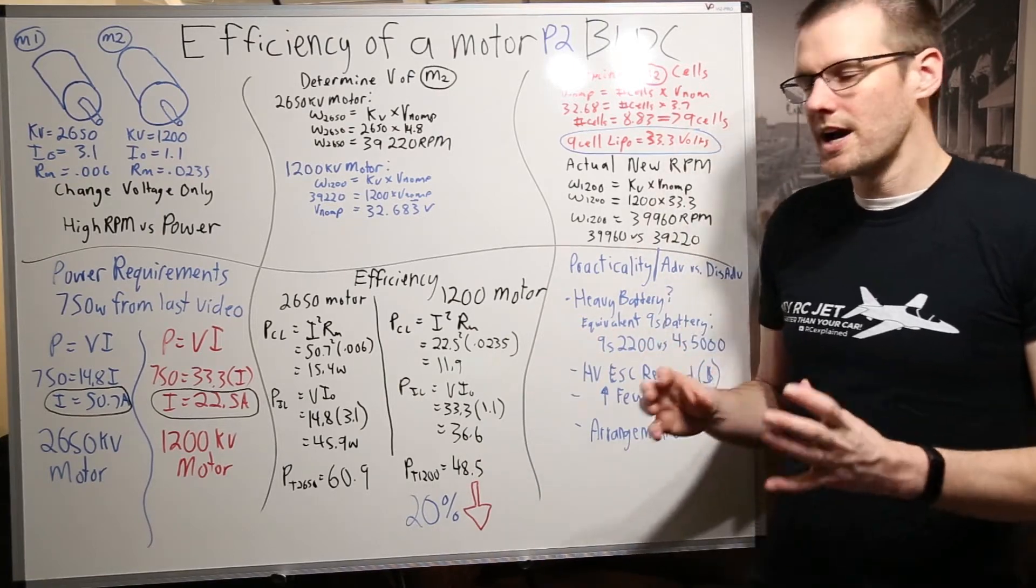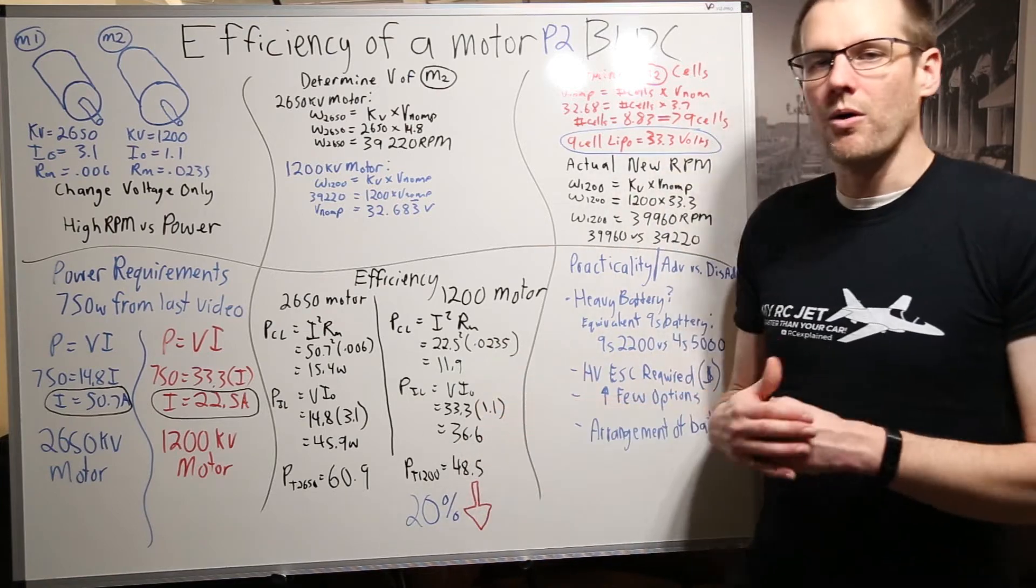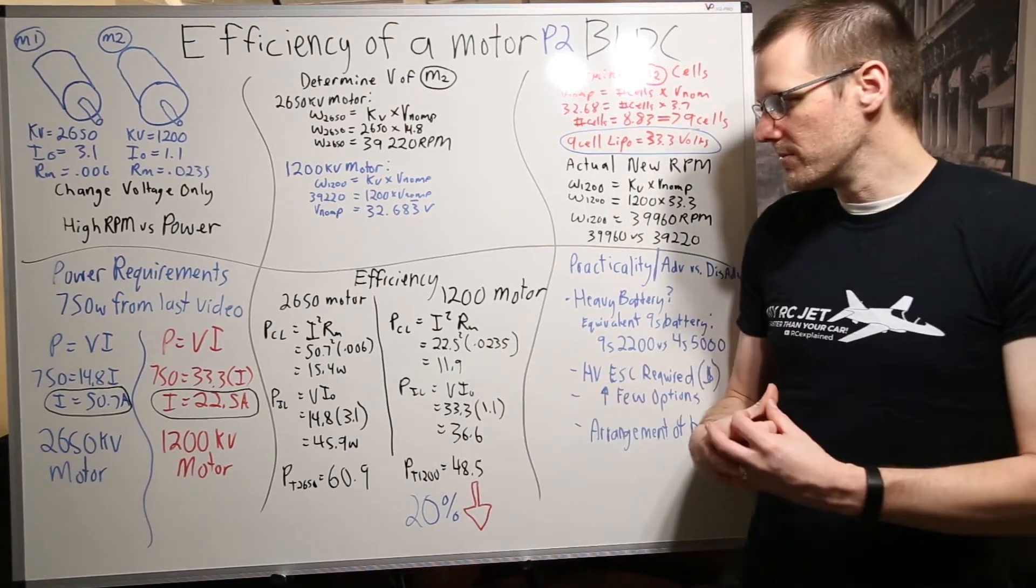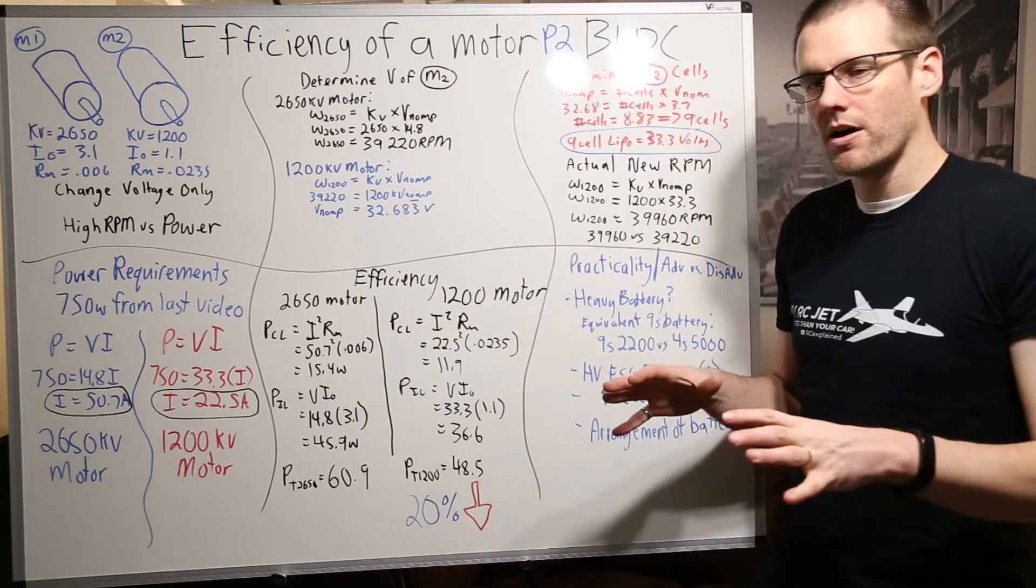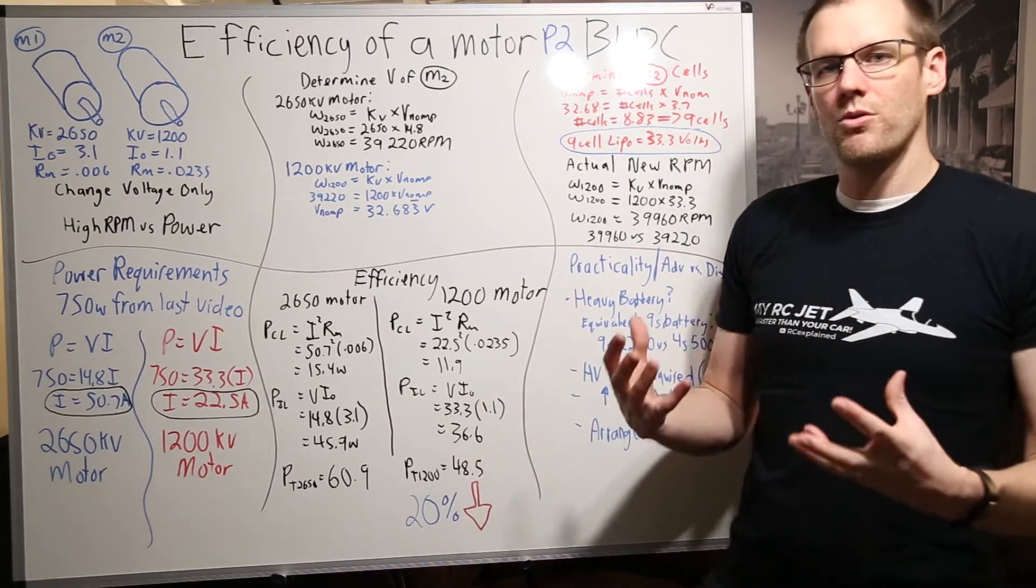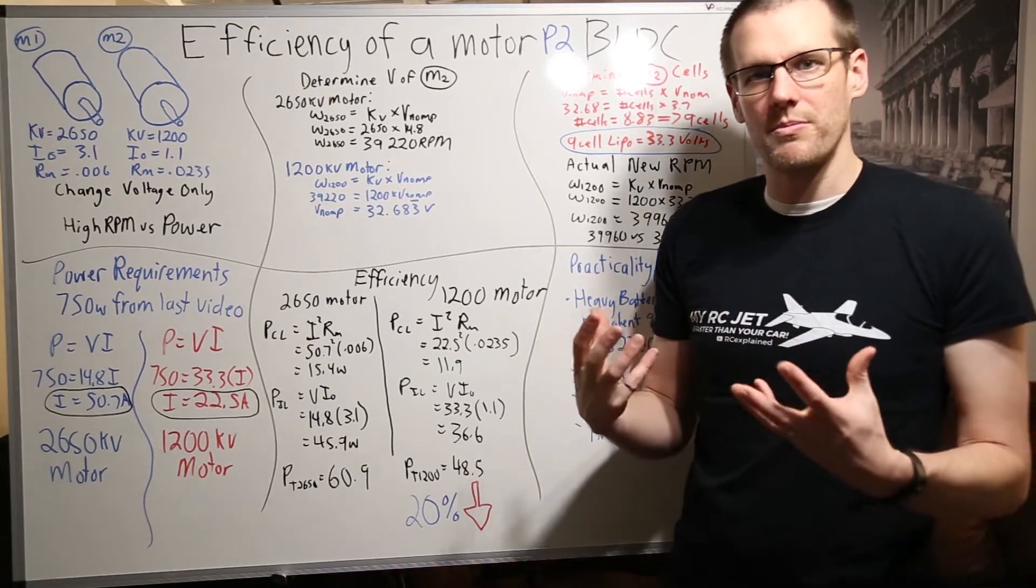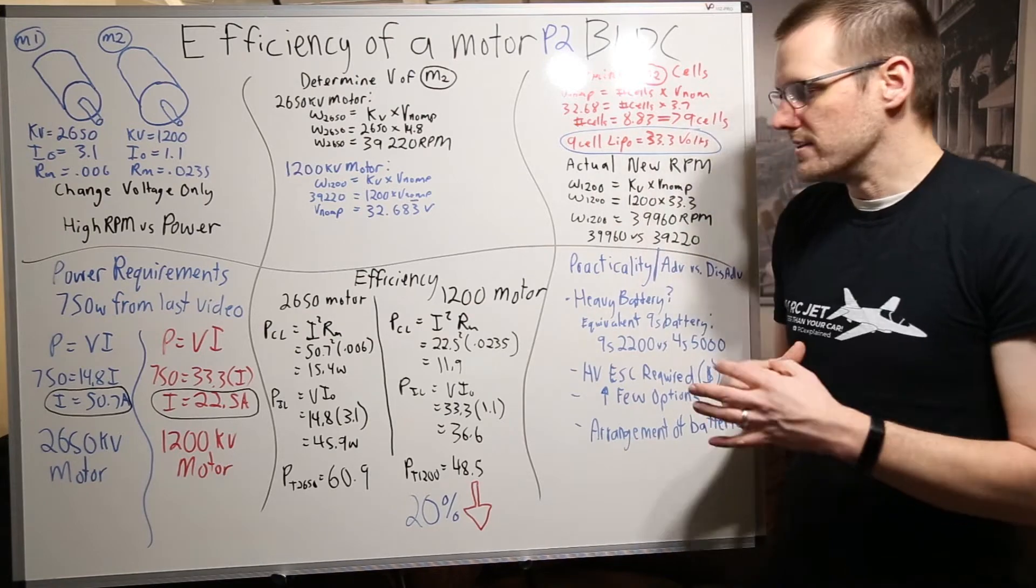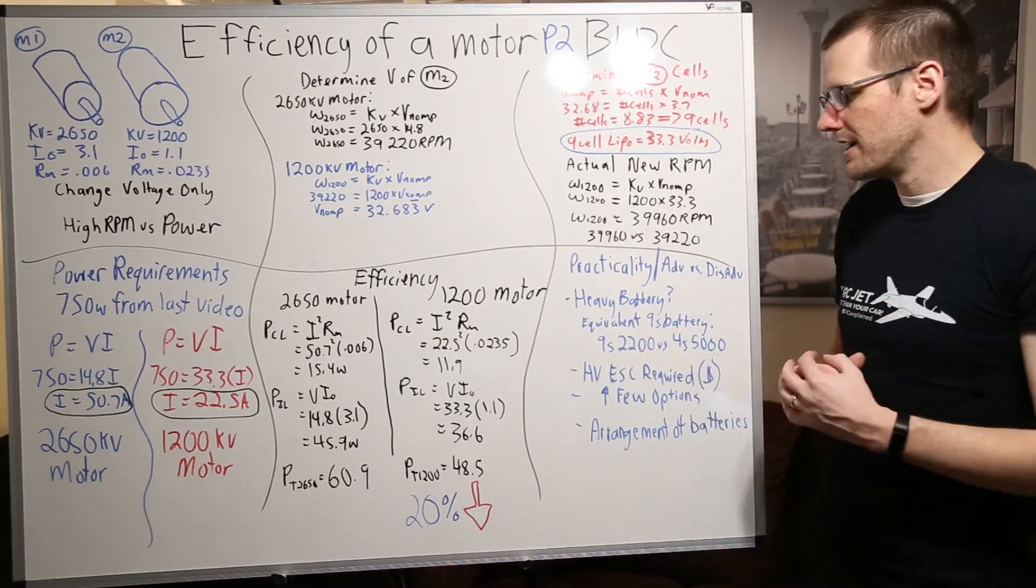It does appear that our 1200 kV motor this week is actually more efficient. Last week it was not. It was actually 20 something percent in the opposite direction. It was not as good but when we change things up we can actually demonstrate and show that it can be more efficient at least on par. So here we get 20 percent more efficient. Now the way we did that is we had to use nine cells of lithium polymer battery pack there instead. So that's a significant thing for us. A 4s versus a 9s.